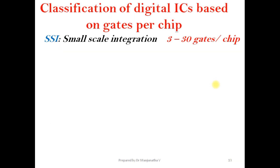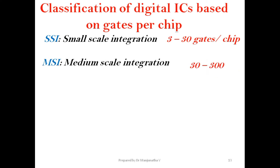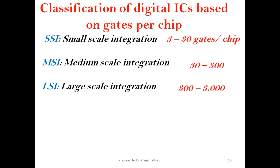Digital ICs are classified based on the number of gates per chip. Small scale integration (SSI) contains 3 to 30 gates per chip. Medium scale integration (MSI) contains 30 to 300 gates per chip. Large scale integration (LSI) contains 300 to 3000 gates per chip.